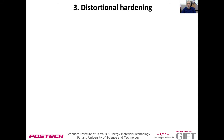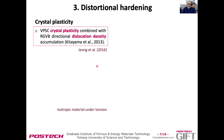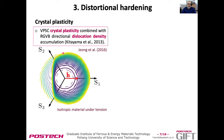Now let's talk about distortional hardening. If we do crystal plasticity for an isotropic material in the pi-plane—the deviatoric plane—and we do tension in direction H, with only crystal plasticity the yield surface expands more or less isotropically. But if we include a dislocation density model which accounts for dislocation interaction, what we see is a flat at the side opposite to loading.